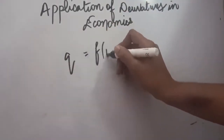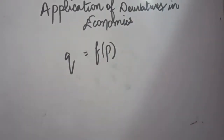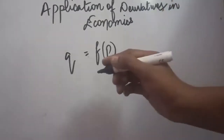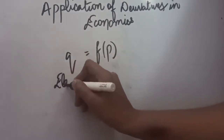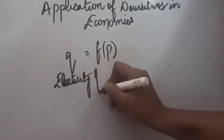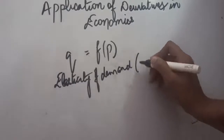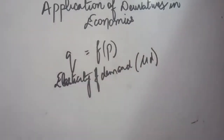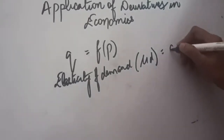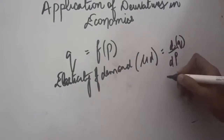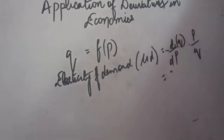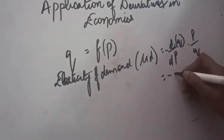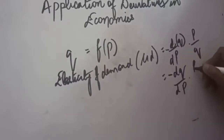In economics, the quantity demanded is a function of price — as the price increases or decreases, the quantity demanded keeps on changing. Elasticity of demand can also be calculated with the help of derivatives. We denote elasticity of demand by μd, and the formula is: dq/dp multiplied by p divided by q, written with a negative sign as: minus (dq/dp) × (p/q).